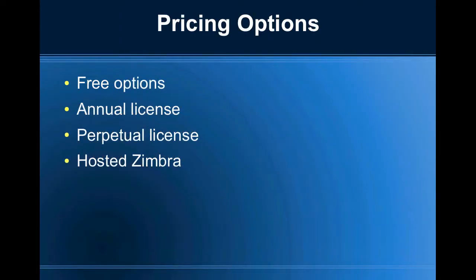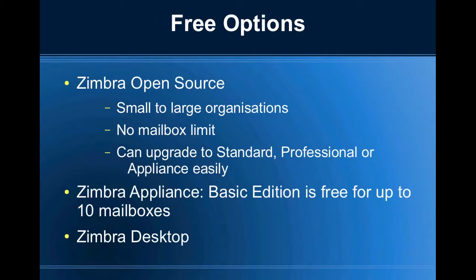The pricing options available for Zimbra are: free, annual licensing, perpetual licensing, and also you can get a hosted Zimbra install. Free options available include Zimbra open source. For small to large organisations, it has no mailbox limit and you can also upgrade to standard, professional or the appliance easily from the open source edition. So you'll select this option if you don't actually require the paid features. The Zimbra appliance is also available as a basic edition which is free for up to 10 mailboxes, and of course there's the Zimbra desktop.